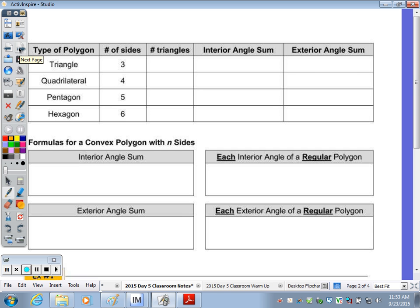This table summarizes what you did in the exploration. We said the number of triangles was how many less than the number of sides? Two. If it's a triangle, could we draw any diagonals inside? No, it just had the one triangle. Quadrilateral, we had two. Pentagon, we had three. Hexagon, we had four.